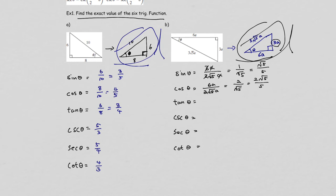Tangent is 3a over 6a, which is 1 half. For the reciprocal functions, flip before you rationalize since you no longer need to rationalize after flipping. Cosecant flips sine to get square root of 5. Secant flips cosine to give square root of 5 over 2. Cotangent flips tangent to give 2.